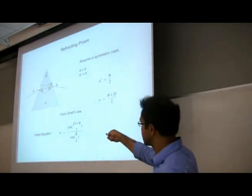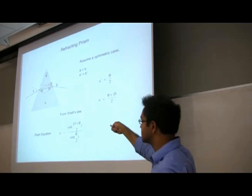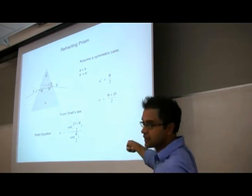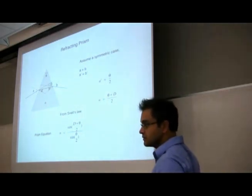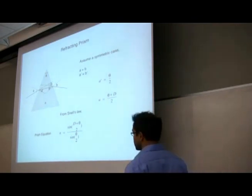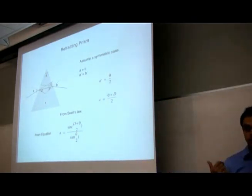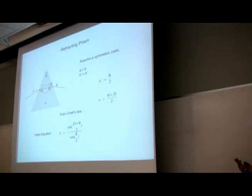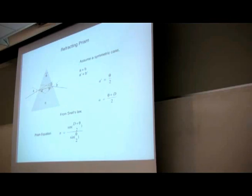In the asymmetric case where A is not equal to B, the deviation will be different, but it's just geometry. In ray tracing we need to take this into account as well, because you could have prisms in your system. For instance, you may consider using prisms to separate spectral bands of sunlight to absorb the light more efficiently — we'll talk briefly about that.